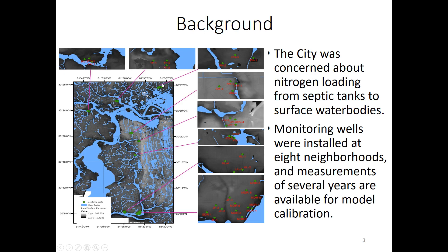The city of Jacksonville was concerned about nitrogen loading from septic tanks to surface water bodies. They developed a monitoring program and installed monitoring wells at a total of eight neighborhoods to measure hydraulic head, nitrogen concentration, and other geochemical or water quality parameters at the monitoring wells. From those eight neighborhoods, we picked two: Agglisten Heights and Dreamland Creek. We conducted ArcLit modeling and model calibration for those two neighborhoods.